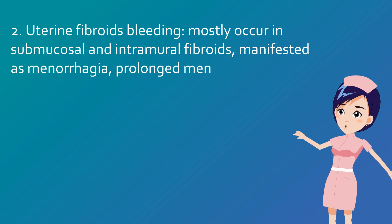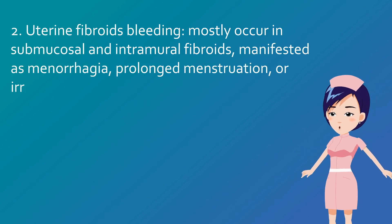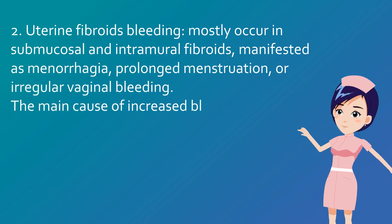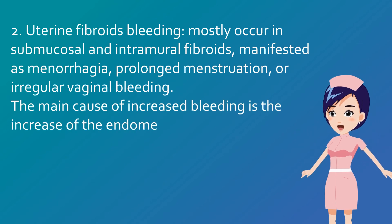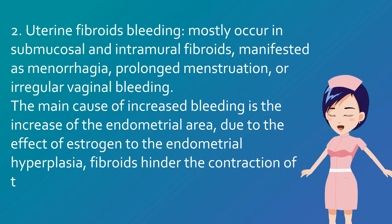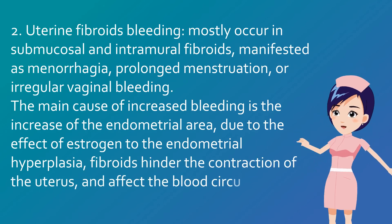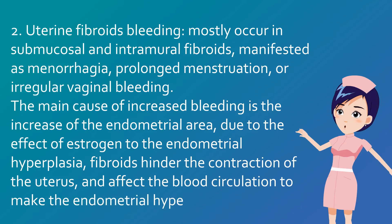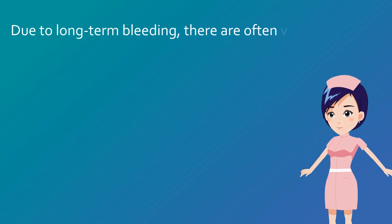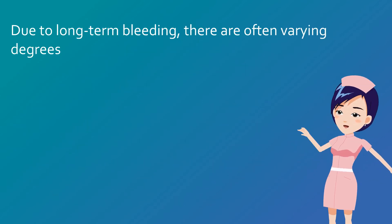Uterine fibroids bleeding mostly occurs in submucosal and intramural fibroids, manifested as menorrhagia, prolonged menstruation, or irregular vaginal bleeding. The main cause is increased endometrial area due to estrogen-driven endometrial hyperplasia, and fibroids hindering uterine contraction, affecting blood circulation. Due to long-term bleeding, there are often varying degrees of anemia.